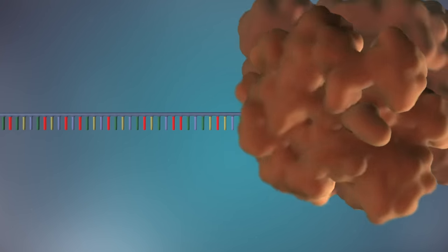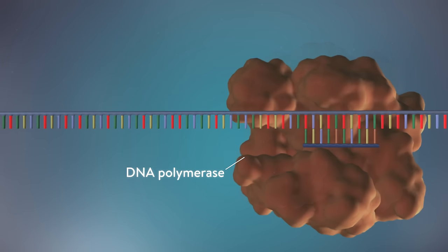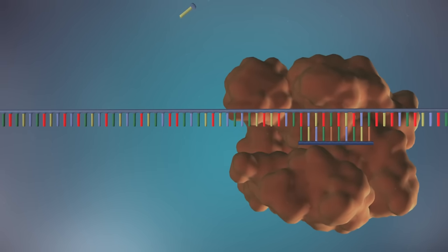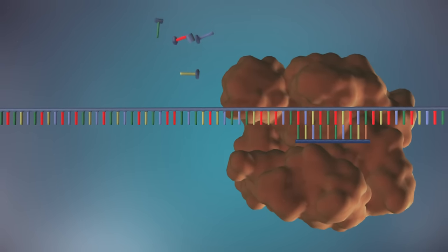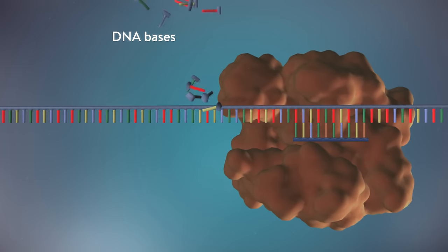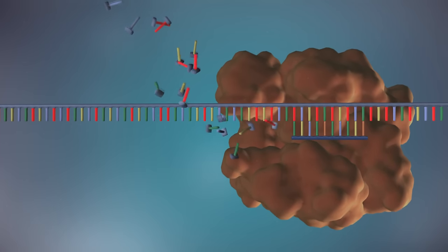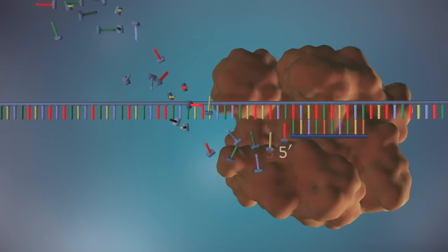An enzyme called DNA polymerase binds to the primer and will make the new strand of DNA. DNA polymerase can only add DNA bases in one direction, from the five prime end to the three prime end.